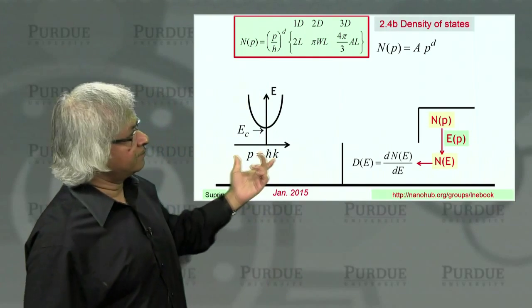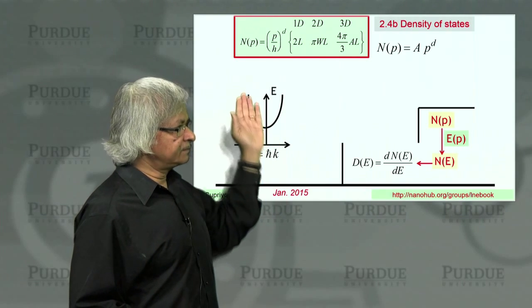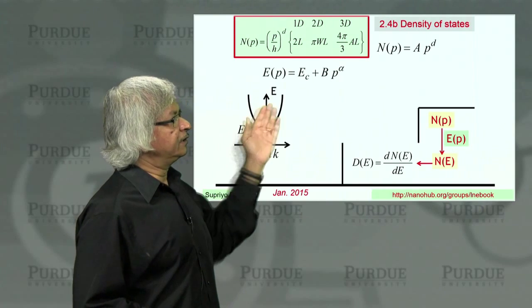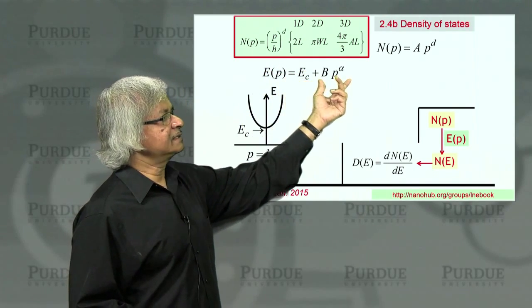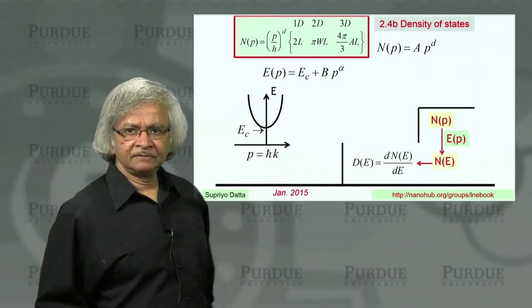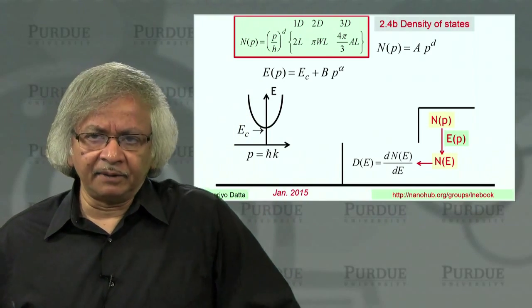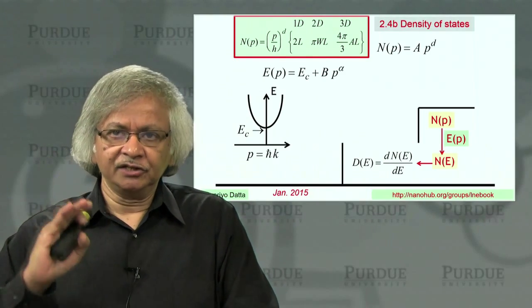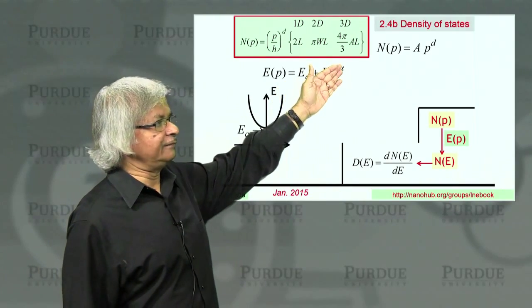What about the energy momentum relation? In general, you might have a bottom of the band Ec, and then it varies with p in a certain way. Let's write it as E of p equals Ec plus some unimportant constant and then p to the power alpha. As we discussed before, often one deals with parabolic bands, in which case alpha is 2, that is, energy goes as p squared. But here, let's keep it general.